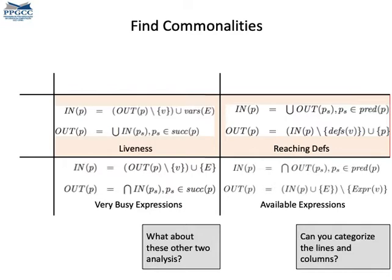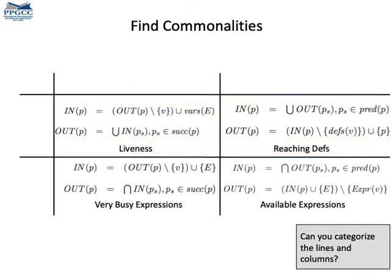And analyses in the same row, what do they have in common? For instance, what's common between liveness and reaching definition analysis? In light of these two examples, can you try to categorize the lines and columns of this matrix?